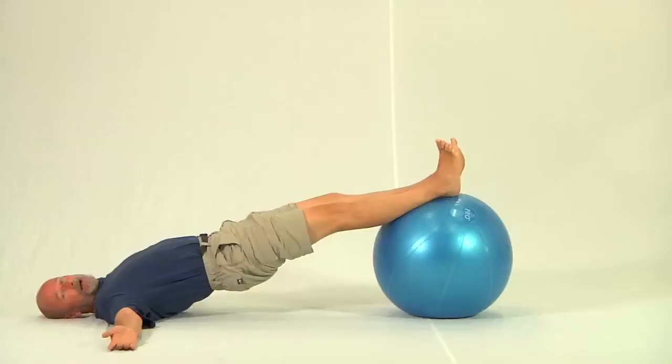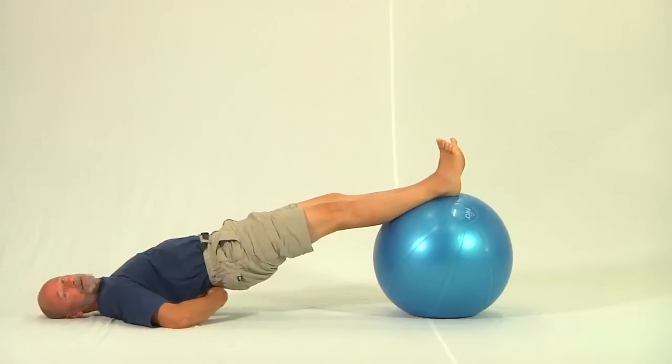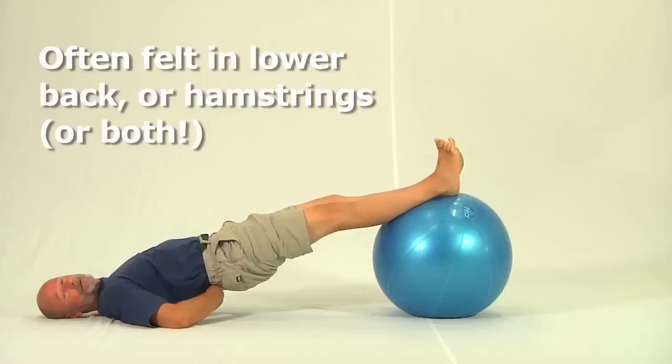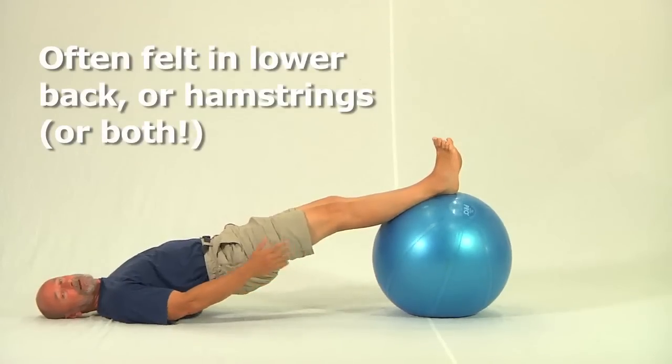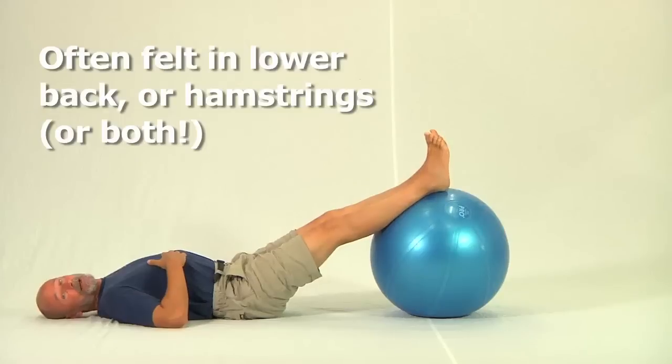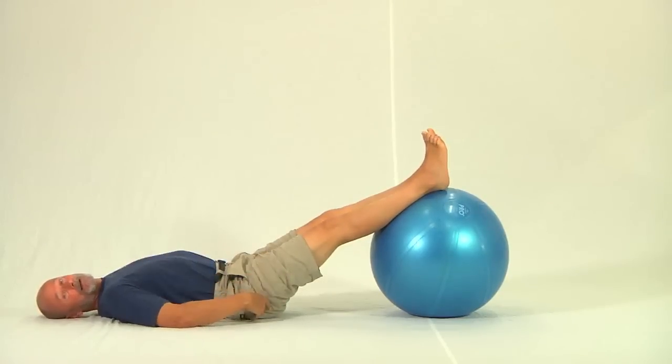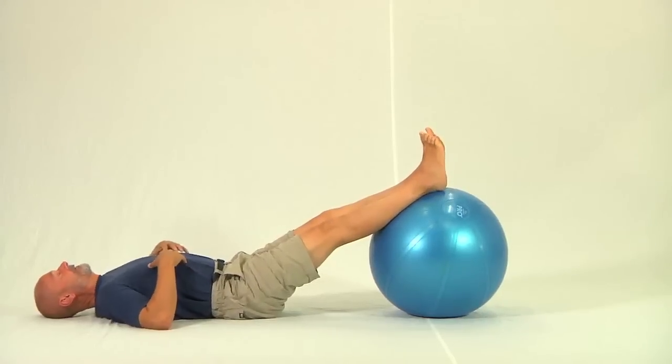The second thing is we ask our students where they feel this action. Most people either feel the lower back muscles, the erector spinae in particular, strongly activated, and many also feel that the hamstrings are strongly activated. So I want to take you through the cues that we use to get the glutes activated rather than those other two muscle groups.